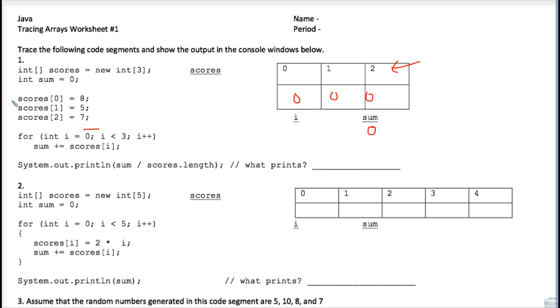And this assignment statement here is storing an 8 into the array position 0 of the array named scores. So we find the array named scores. That column really should have been written sort of like right here because this whole rectangle is the array scores. So an 8 overwrites the 0 that was in position 0, and a 5 overwrites this 0, and the 7 overwrites that 0.